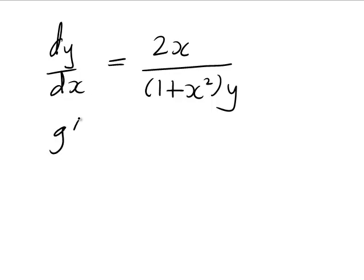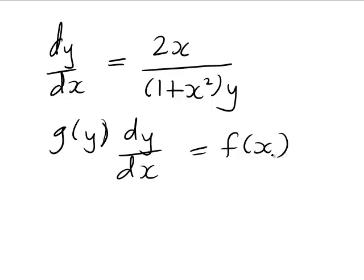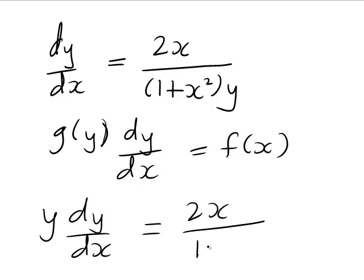And if this is separable, we need to be able to get it in the form g(y) times dy/dx equals f(x). So looking at the above equation, to get it in this form we need to multiply both sides by y to give us y dy/dx equals 2x divided by 1 + x².